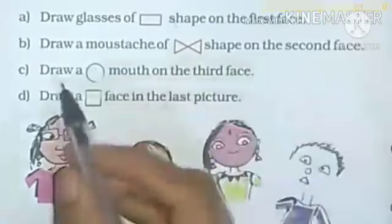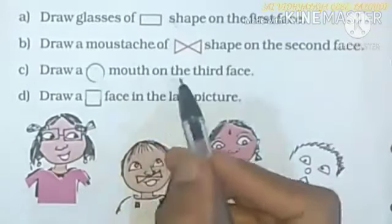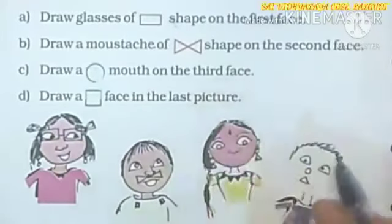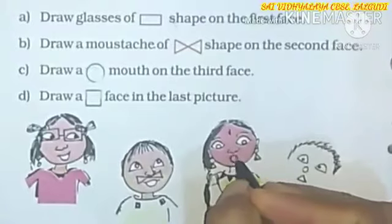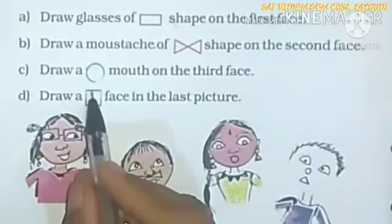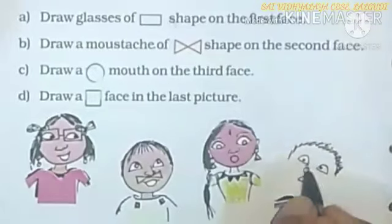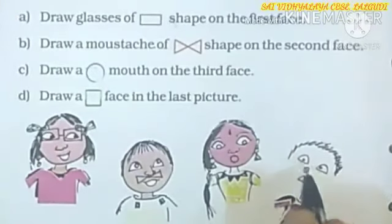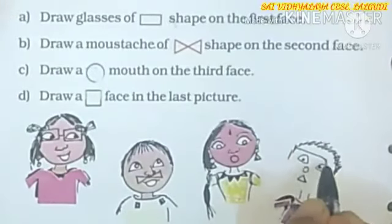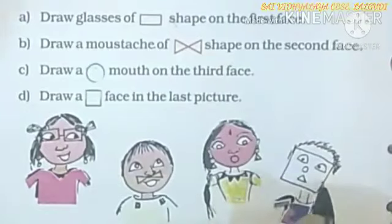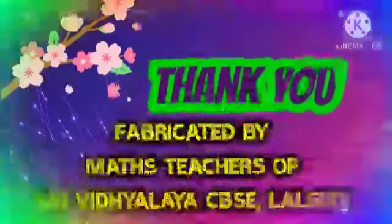Next, draw a circle mouth on the third face. Let's draw a circle. Last, draw a square face in the last picture. Now, let's make a square. Thank you, dears.